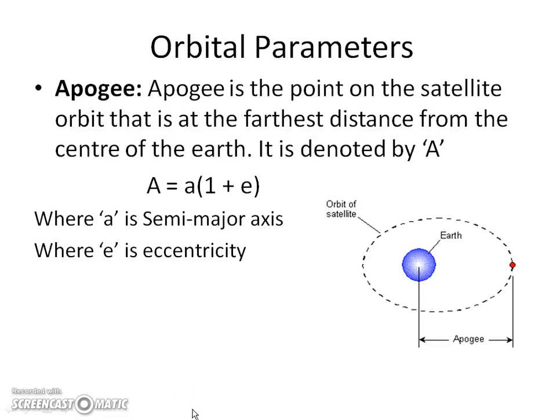Today I am going to discuss a topic called orbital parameters. The different orbital parameters are apogee, perigee, semi-major axis, and semi-minor axis. These are some of the orbital parameters of satellite communications. Let us begin.